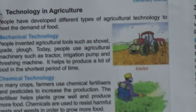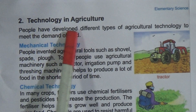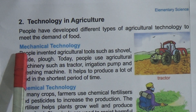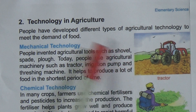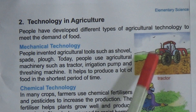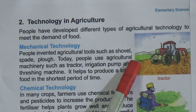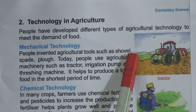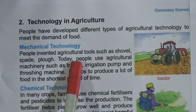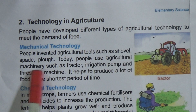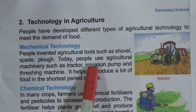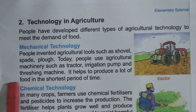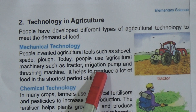Now come to technology in agriculture. People have developed different types of agricultural technology to meet their demand for food. First is mechanical technology — this is the tractor used in agriculture, which is a mechanical technology. People invented agriculture tools such as shovel, spade, and plough. Today people use agricultural machinery such as tractors, irrigation pumps, and threshing machines. It helps produce a lot of food in the shortest period of time.